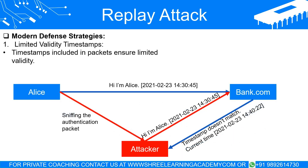Luckily, most modern systems have implemented defenses to combat replay attacks. While the concept of a replay attack is simple, defending against it can be complex and requires a multifaceted approach. One method is to include timestamps in the authentication packets — much like a concert or sports ticket is only valid for a specific time and date. These timestamps ensure that the authentication packet can only be used within a certain time frame. If an attacker captures and attempts to resend this packet after the timestamp has expired, the system will reject it.